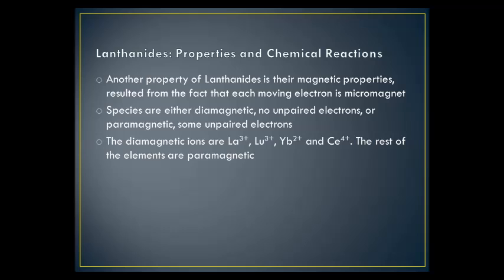Another property of the lanthanides is their magnetic characteristics. The major magnetic properties of any chemical species result from the fact that each moving electron is a micromagnet. The species are either diamagnetic, meaning they have no unpaired electrons, or paramagnetic, meaning that they do have some unpaired electrons. The diamagnetic ions are La³⁺, Lu³⁺, Yb²⁺, and Ce⁴⁺. The rest of the elements are paramagnetic.